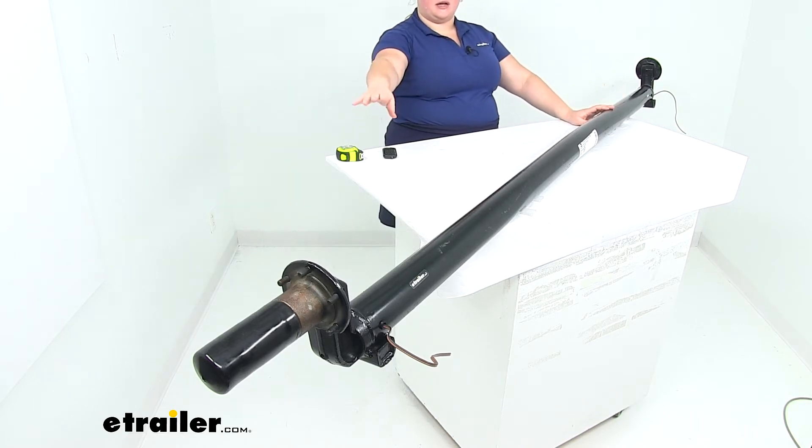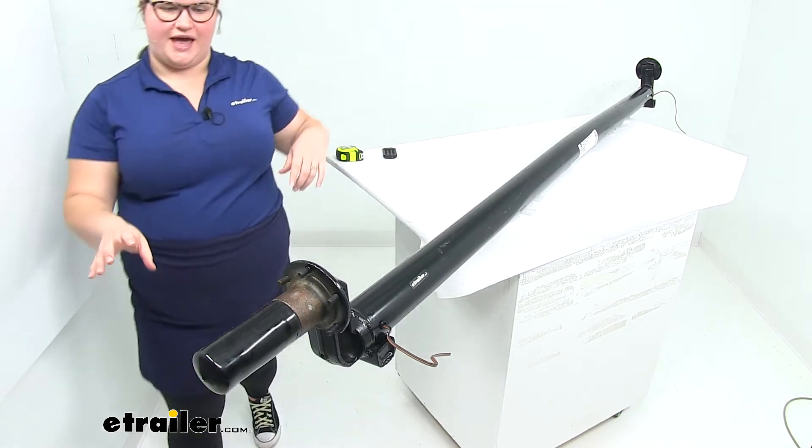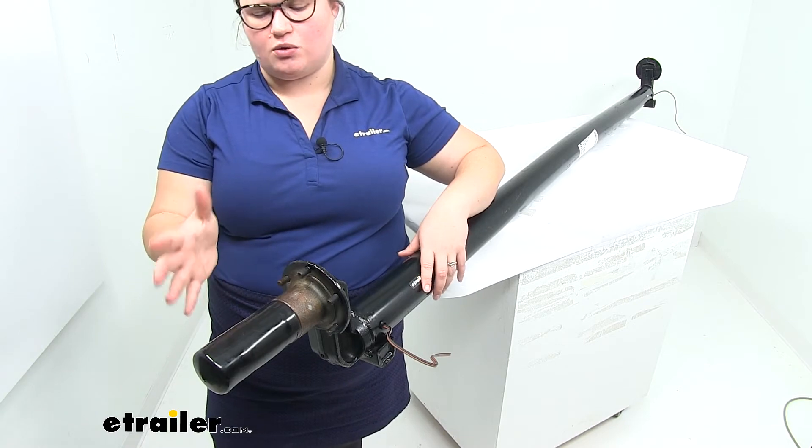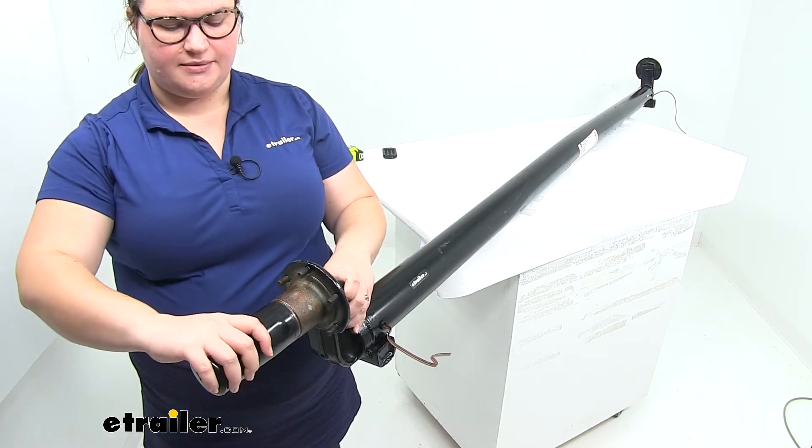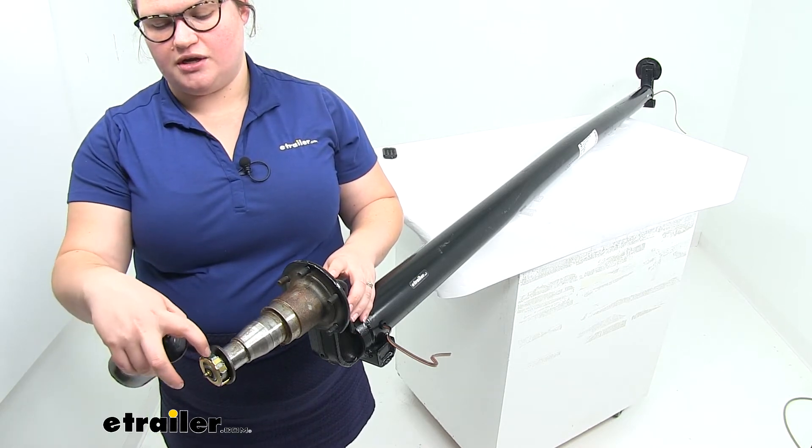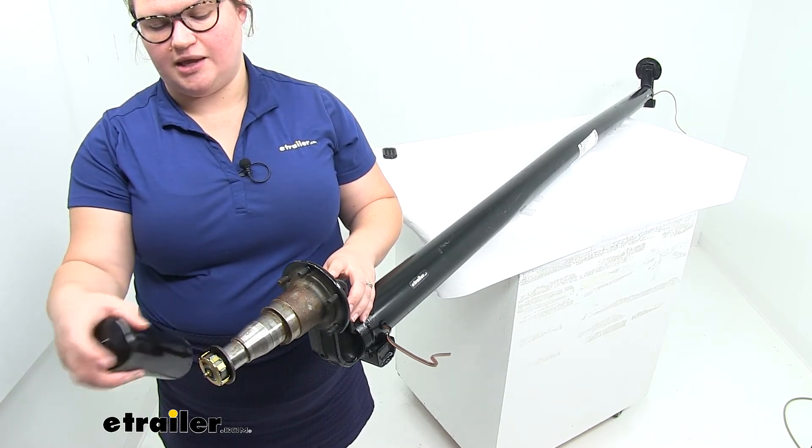So we'll get our axle beam, it has the welded-on spring seats and spindles on either end. Right now I have the little cap that this comes shipped with, so this is going to make sure that everything stays relatively rust-free in transit. Underneath that we'll have our washer, nut, and nut keeper there.